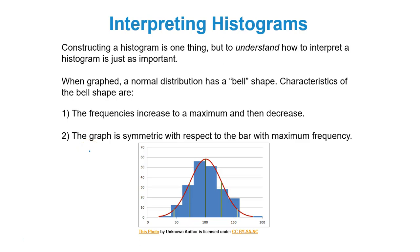So you can construct a histogram, but understanding how to interpret it is totally important. When graphed, the normal distribution has a bell shape. Characteristics of the bell shape are as follows: the frequencies increase to a max and then decrease. Remember, they start low, they get high, they get low again. The graph is symmetric with respect to the bar with maximum frequency. So pictured here, I have a nice, perfect bell-shaped histogram. You start low, you get high, you get low again. And notice everything is kind of symmetric with respect to the bar with maximum frequency.